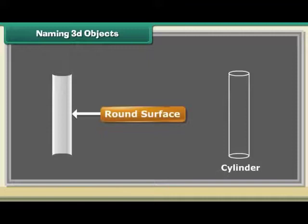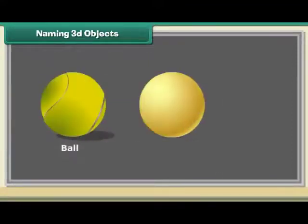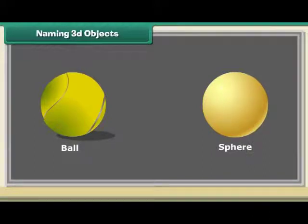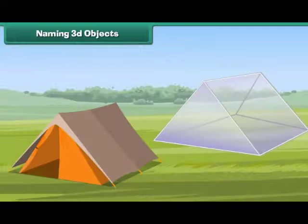A chalk is a cylinder. It has a round surface and two flat surfaces. A ball is a sphere. It has a round surface. A tent is a prism. It has corners and flat surfaces.